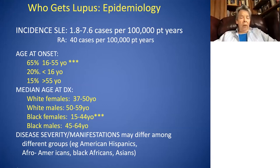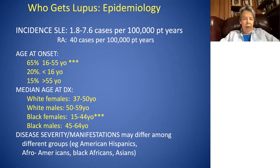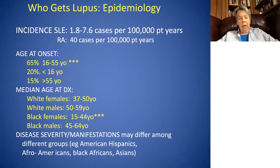Lupus predominantly involves females. In one study, white females were ages 37 to 50, but interestingly black females were younger, ages 15 to 44. The same is true with black versus white males. All females of different ethnic and racial groups are affected more commonly than males, but you certainly cannot rule out the diagnosis in an individual who doesn't fall inside these demographic groups. American Hispanics, Afro Americans, black Africans, and Asians all have different severity and manifestations — and typically have more severe disease than other measured groups.